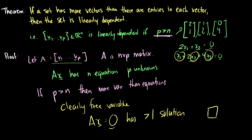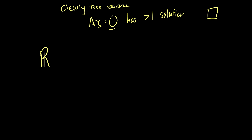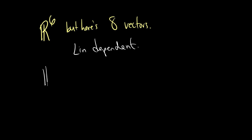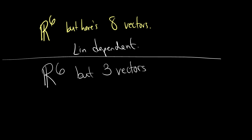As an example: if we're in R6 and we're given eight vectors, the set must be linearly dependent because there are more vectors than rows. But if we're in R6 and given only three vectors, we cannot immediately conclude independence — we still need to solve to determine whether they are dependent or independent.